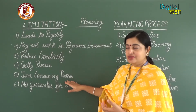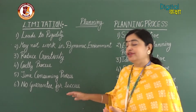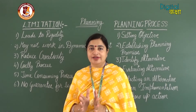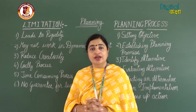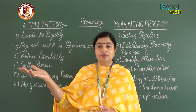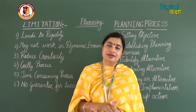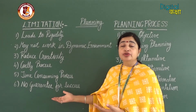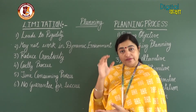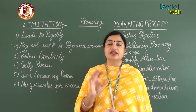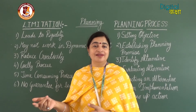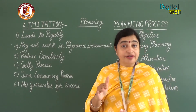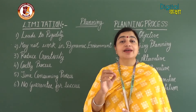The sixth limitation is: planning is not a guarantee for success. You can plan everything, but you cannot guarantee it will be successful. Even if a plan was successful previously, it may not be successful every time. You plan with certain assumptions about what is going to happen, and if those assumptions don't hold, you face failure. Planning may reduce your chances of failure, but it cannot guarantee success.